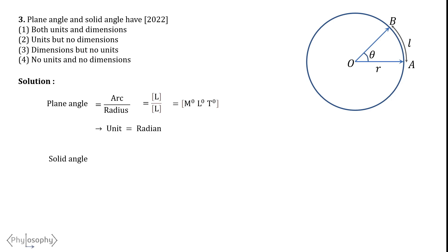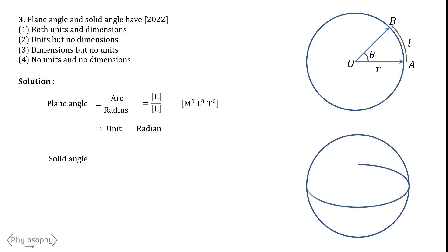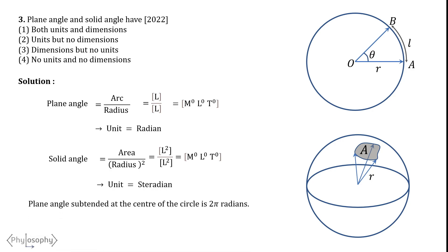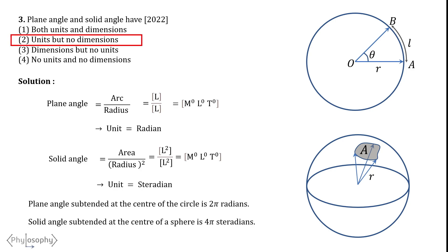For the solid angle, which is the ratio of the subtended area on a sphere to radius squared, it is defined as area over radius squared. Both area and radius squared have the same dimensional formula L², so the dimensional formula for solid angle is M⁰L⁰T⁰ — solid angle also has no dimensions, but its unit is steradian. As additional information, the plane angle subtended at the center of a circle is 2π radians, and the solid angle subtended at the center of a sphere is 4π steradians. So plane and solid angles have units but no dimensions — option 2 is correct.